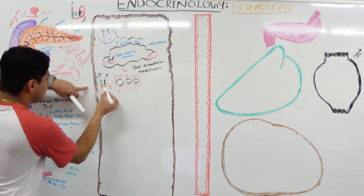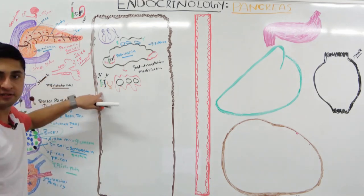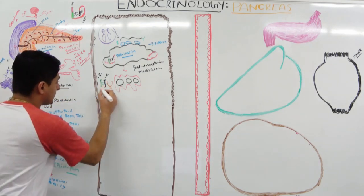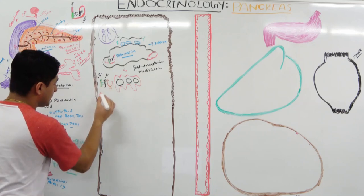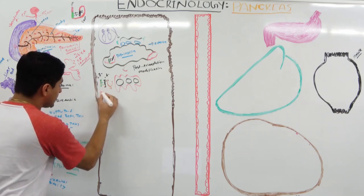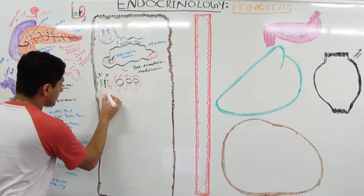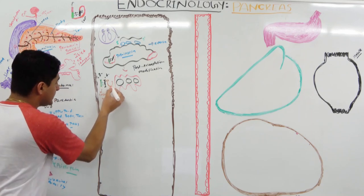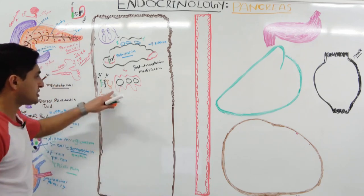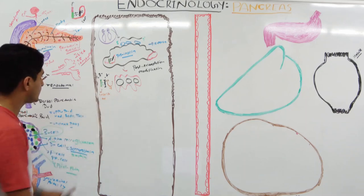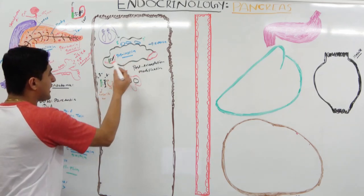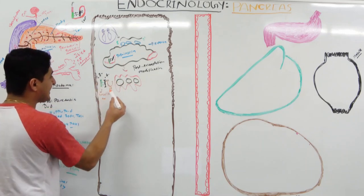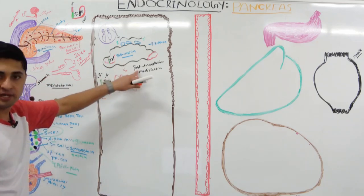The biologically active insulin consists of the B chain and A chain connected by disulfide bonds, with additional internal disulfide bonds on the A chain. The C chain that is cleaved off is known as the C peptide. The breakdown of proinsulin produces your insulin and your C peptide.